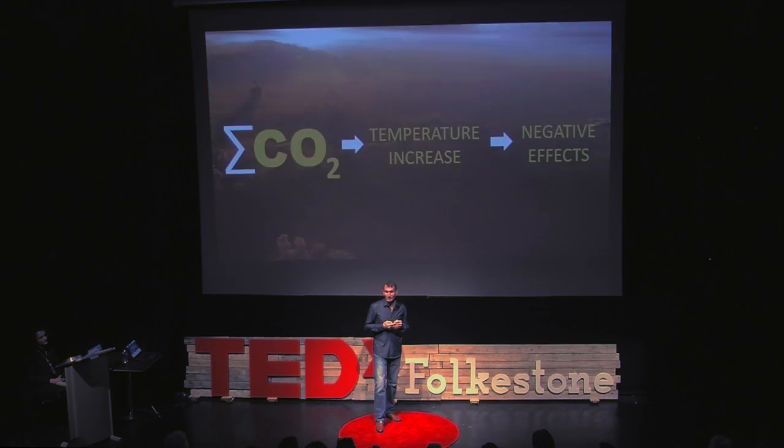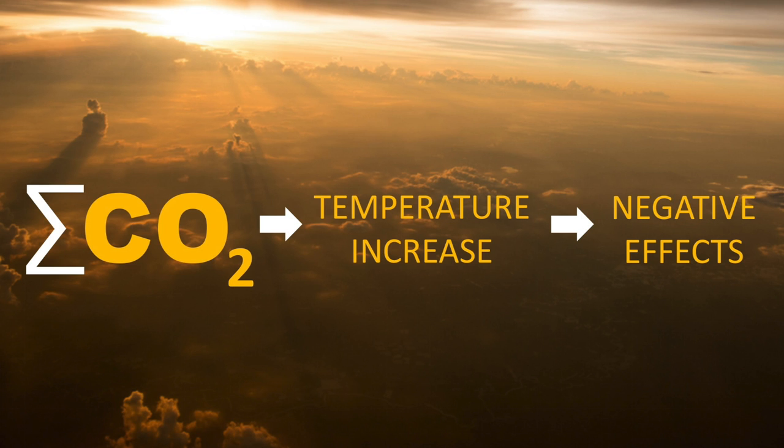The equation on climate change is very simple. CO2 in the atmosphere leads to a temperature increase, which leads to some very serious negative effects, such as drought, flooding, and even complete ecosystem collapses.